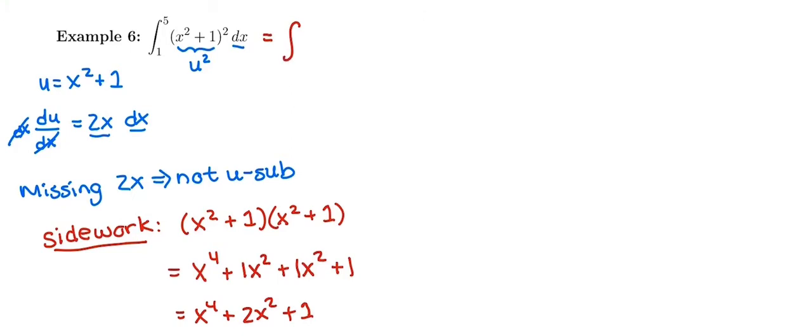So it's not like if u sub doesn't work, you can't do it. It just means you've got to actually do the algebra to multiply it out or square it out in this case. So we're really taking the integral from 1 to 5 of x to the 4th plus 2x squared plus 1 dx.